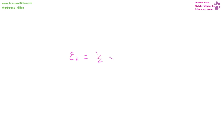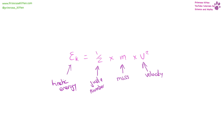Kinetic energy is equal to half times mass times velocity squared. Kinetic energy is measured in joules, half is just a number, mass is measured in kilograms, and velocity is in meters per second. Remember, it's just the velocity that's squared, not the whole thing.